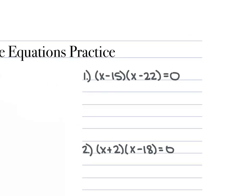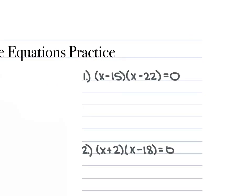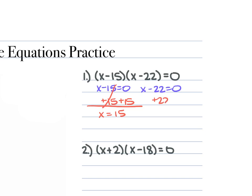For example, problem 1: we are given (x − 15)(x − 22) = 0. So we set x − 15 = 0 and x − 22 = 0. Then we solve for x: add 15 to both sides and we get x = 15. Add 22 to both sides and we get x = 22.